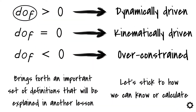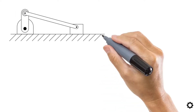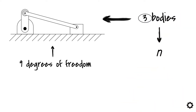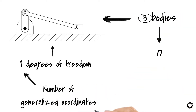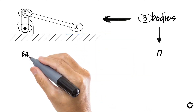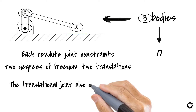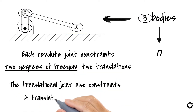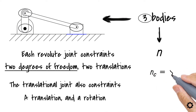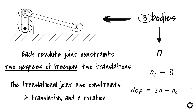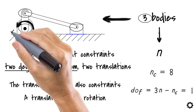Let's take a crankshaft mechanism as an example. This mechanism has three bodies — that's the value for our n — meaning our mechanism consists of 9 degrees of freedom due to the number of planar bodies. These are the generalized coordinates of our system. We also see three revolute joints and one translational joint. Each revolute joint constrains two degrees of freedom — two translations. The translational joint also constrains two degrees of freedom — a translation and a rotation. This leaves us with eight constraints, and our resultant number of degrees of freedom of this system is 1, corresponding to the rotation of the crank around the point O.